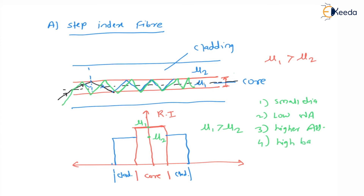Bandwidth means the range of frequencies over which we can transmit the data. It is the difference between higher frequency fH and lower frequency fL, so bandwidth equals fH minus fL. Step index fiber offers high bandwidth, but the attenuation loss is also high.